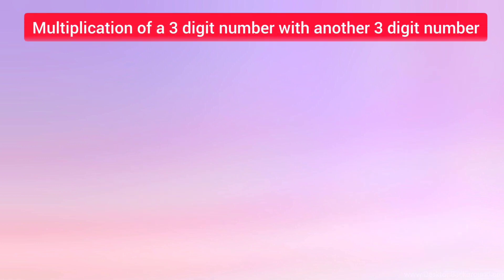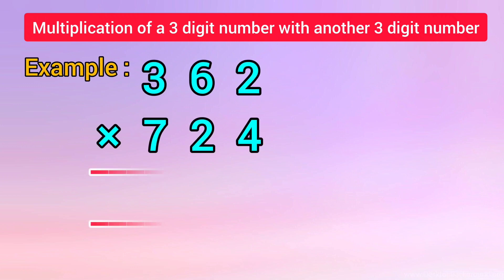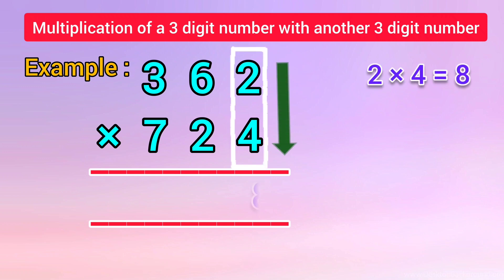This trick can be extended to the multiplication of 3-digit numbers. Let us understand it with an example. In step 1, we need to multiply the numbers on the right-hand side vertically. That is, 2 fours are 8. We put down 8 below.